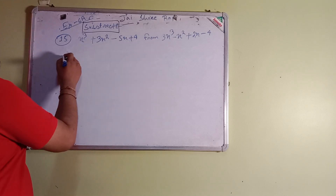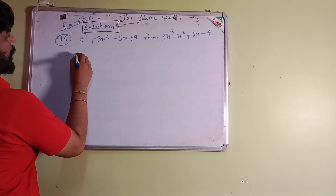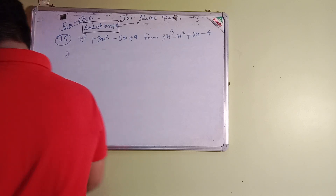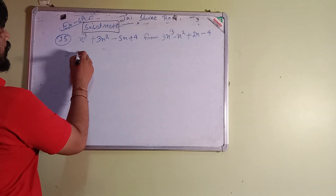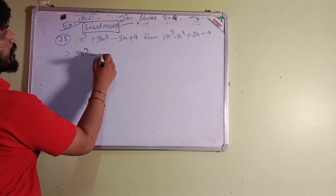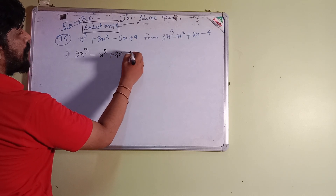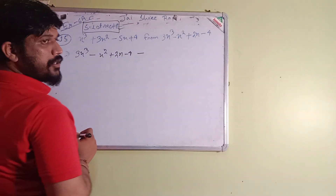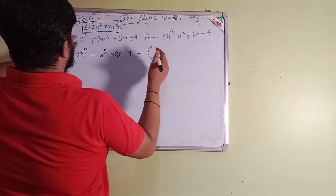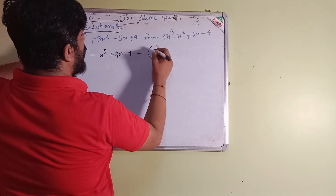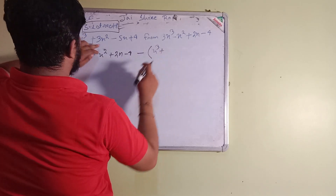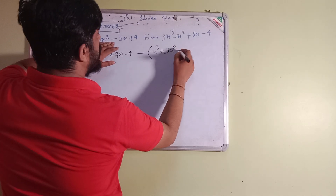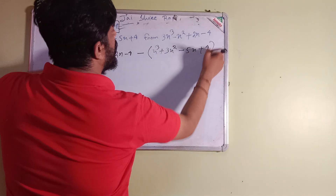Number 15 says to subtract one number from another. So we first write: 3x³ minus x² plus 2x minus 4. Then we place the subtraction sign and use a bracket so that the minus sign will multiply to each and every sign of the next number: x³ plus 3x² minus 5x plus 4.